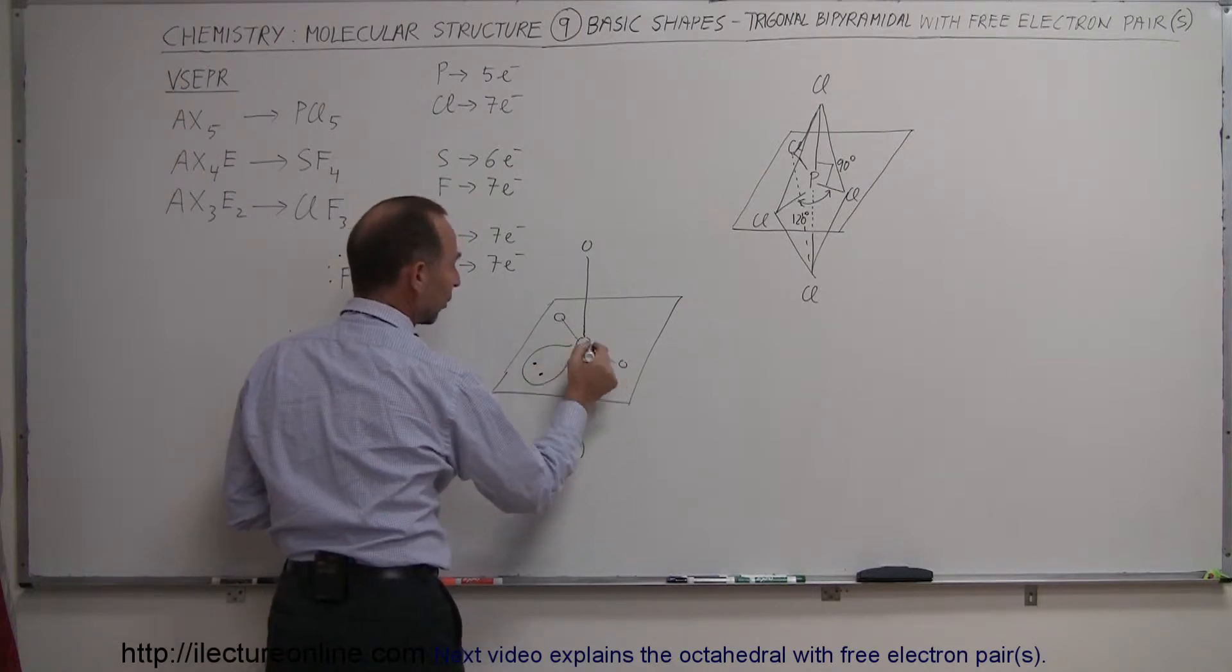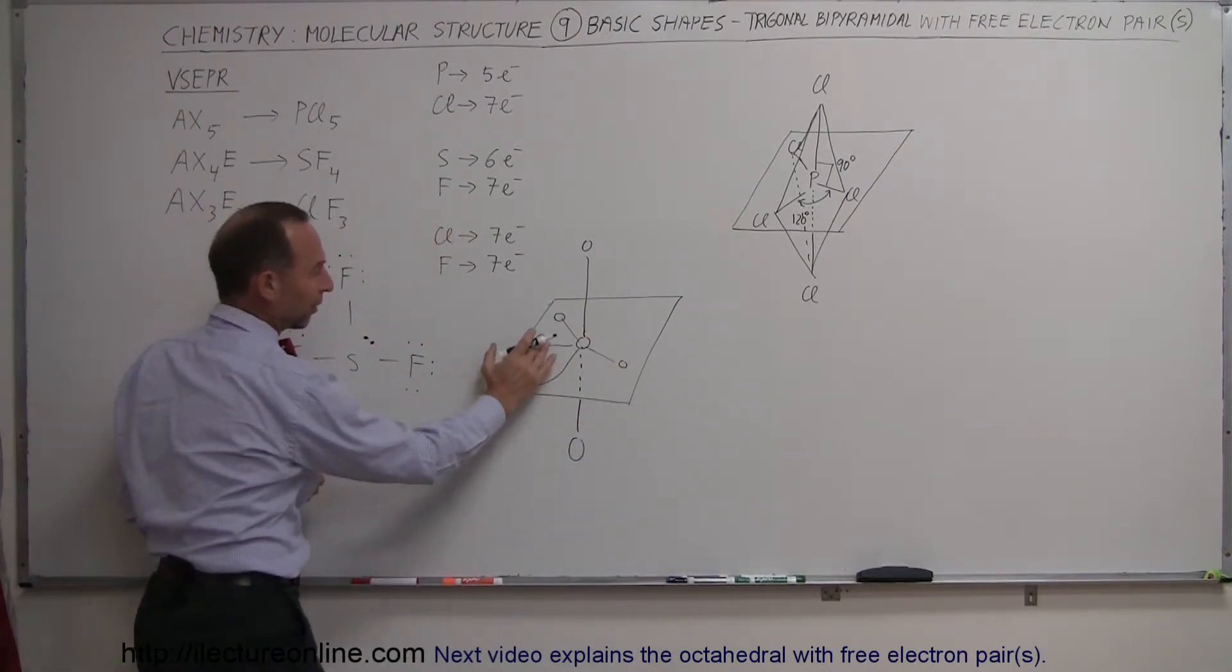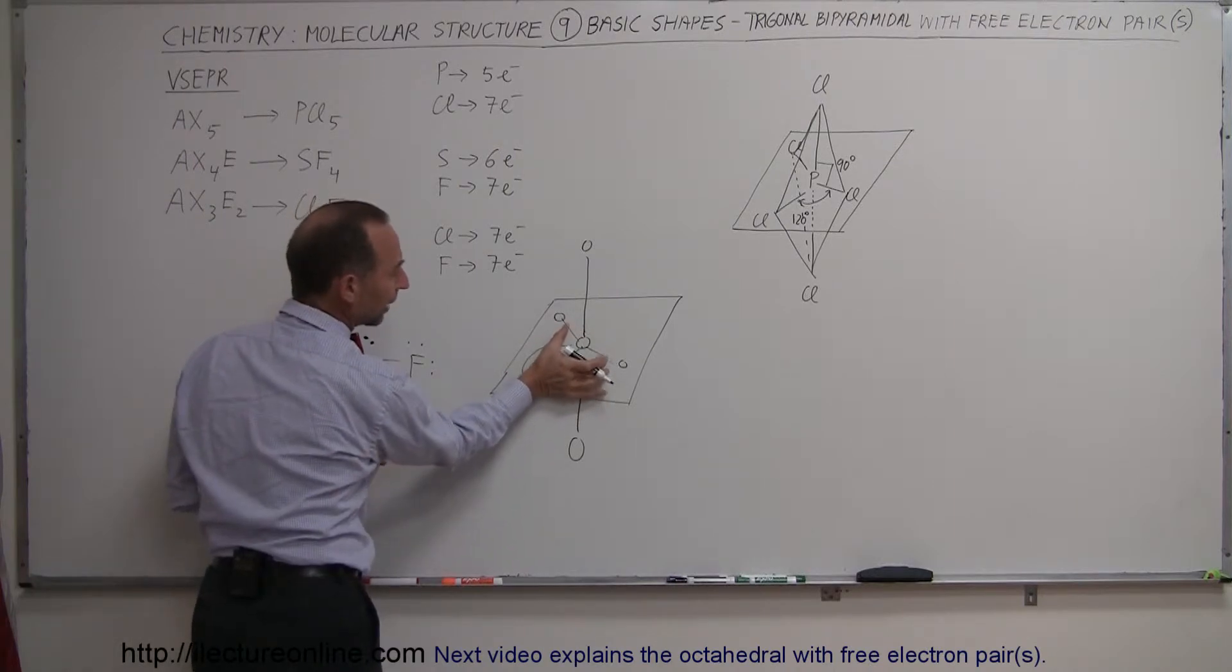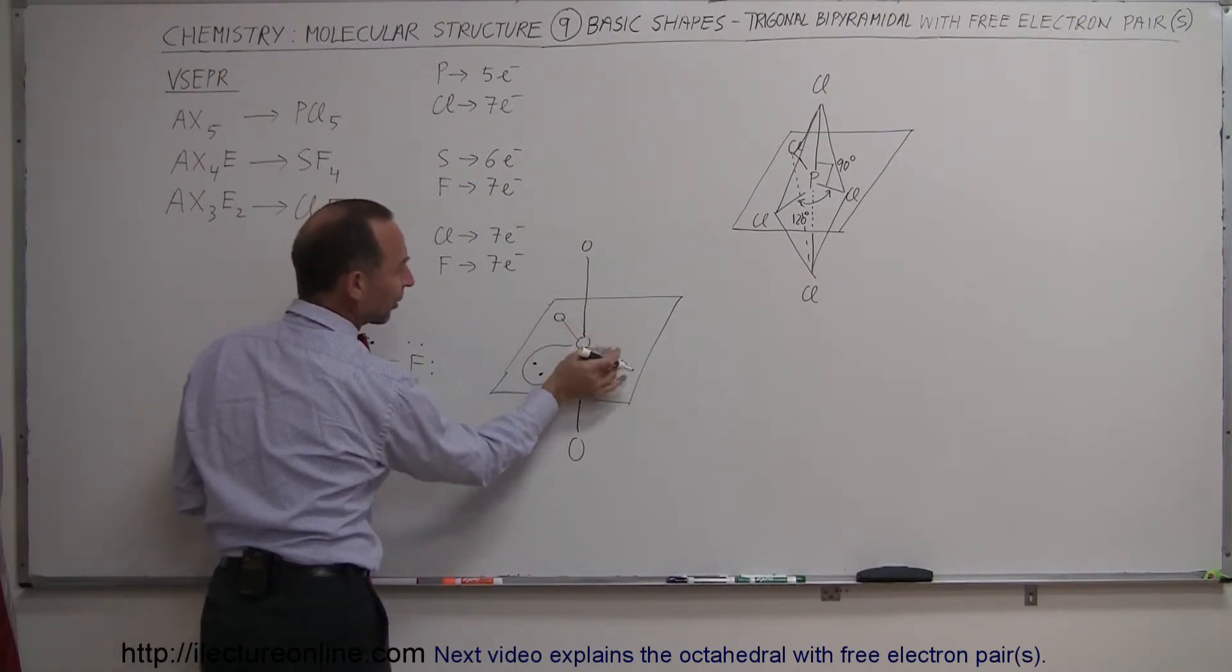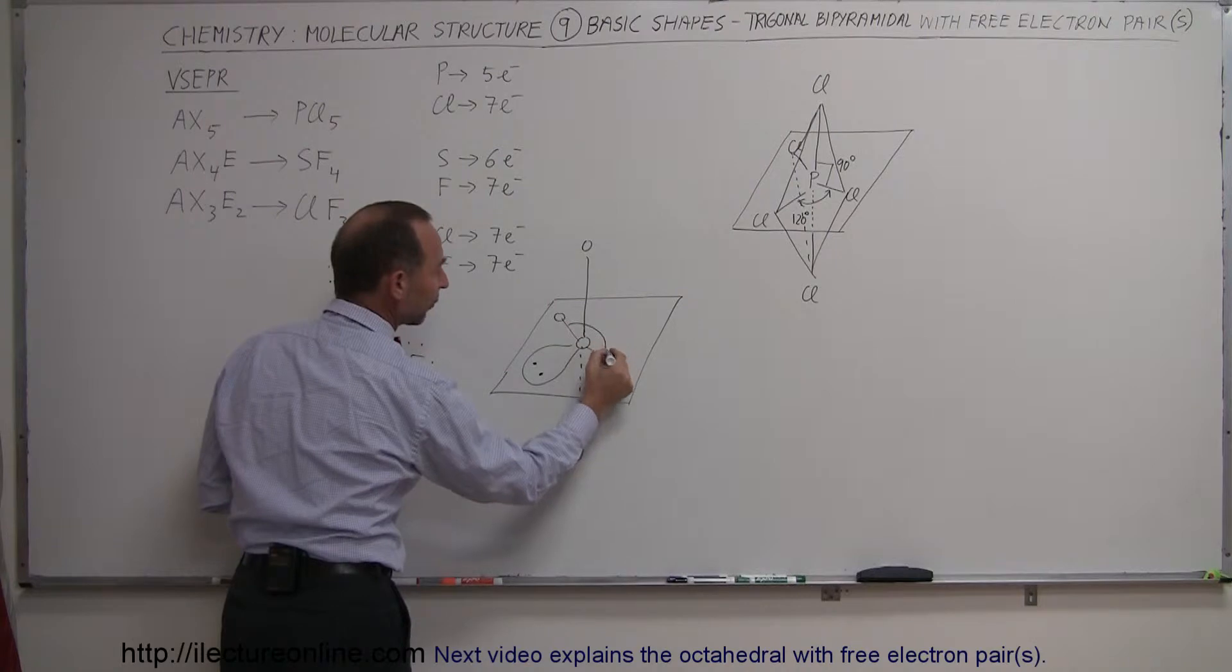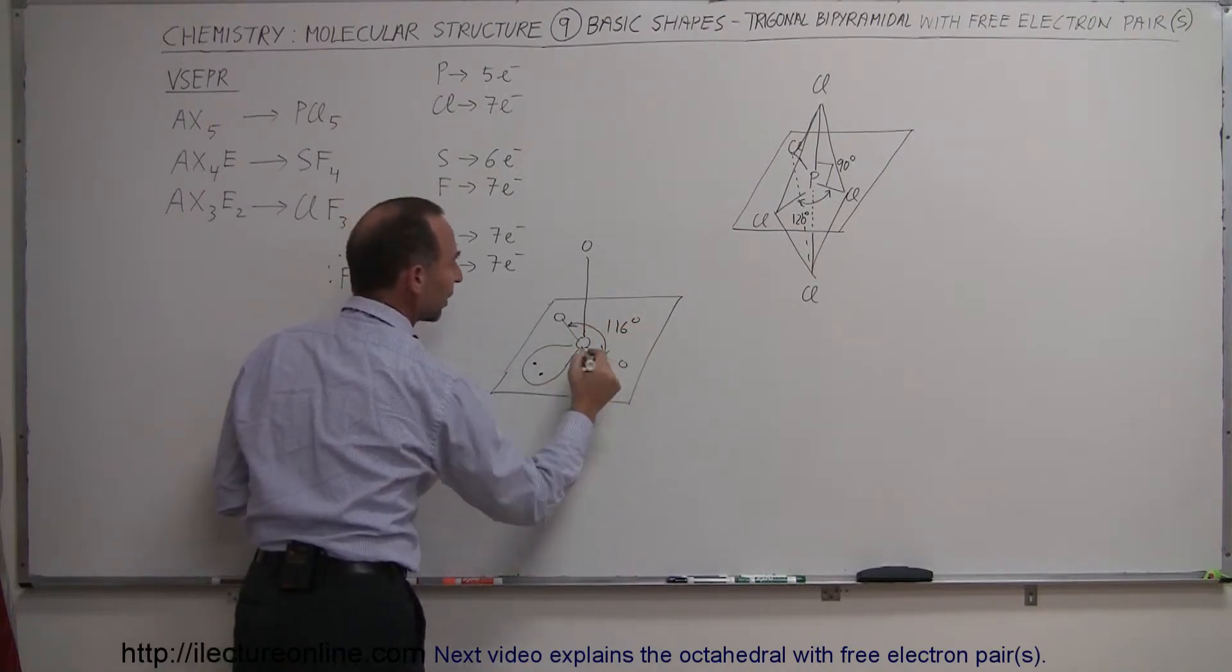Notice now that since the repulsive forces between this free electron pair and those electrons in those bonds, since those repulsive forces are greater, the bond angle in here will get smaller. Instead of 120 degrees, this bond angle over here is now only about 116 degrees.